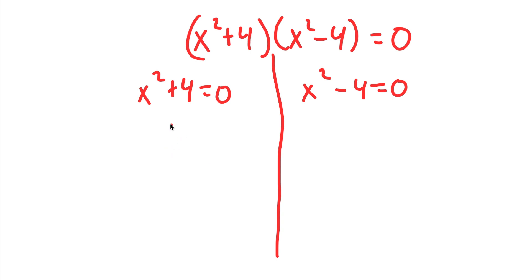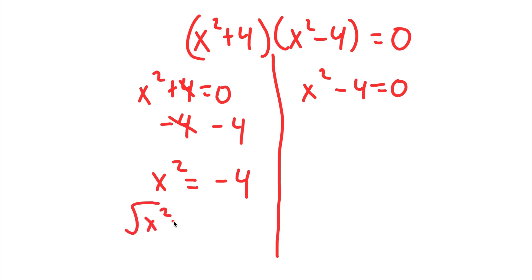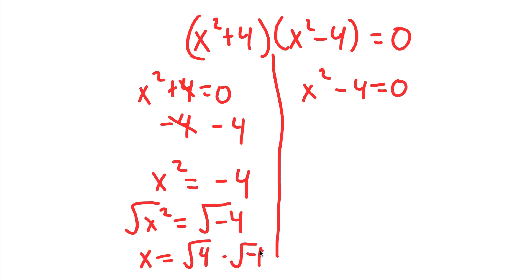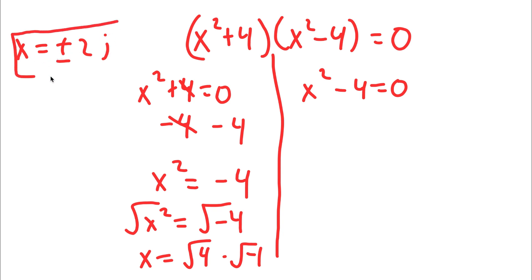To solve x to the power of 2 plus 4 equals 0, I'm going to first subtract 4 on both sides. So now I have x to the power of 2 is equal to negative 4. Taking the square root on both sides, the square root of x squared is simply x, and the square root of negative 4 can be written as the square root of 4 times the square root of negative 1. The square root of 4 is positive or negative 2, and the square root of negative 1 is the imaginary number i. So x is equal to positive or negative 2i — these are two solutions.